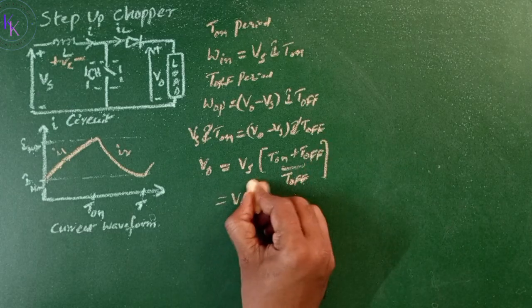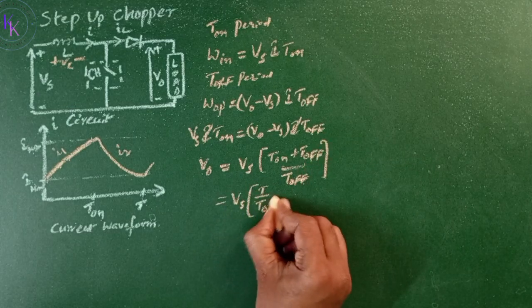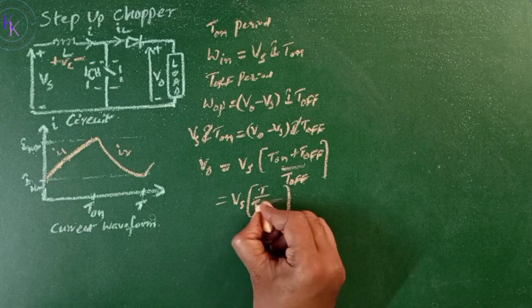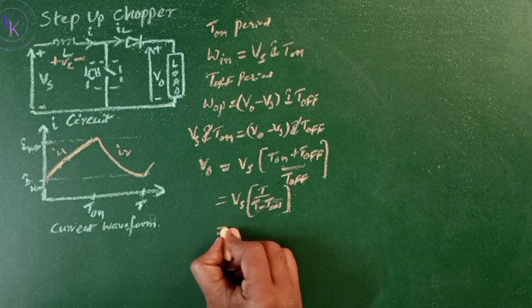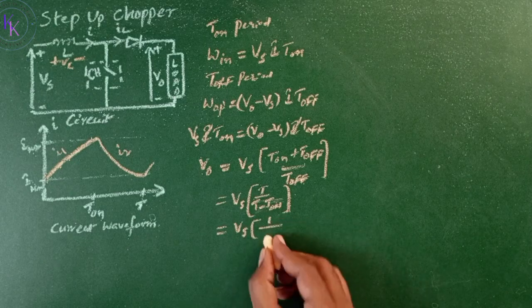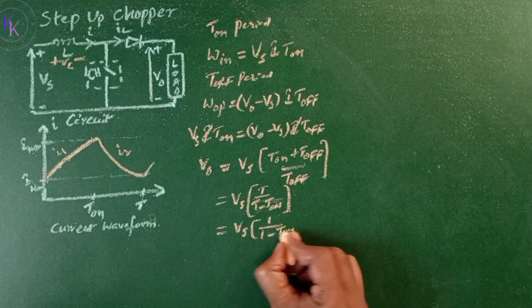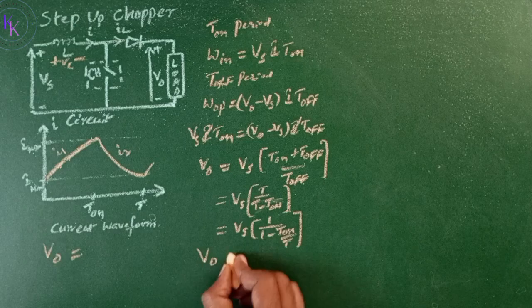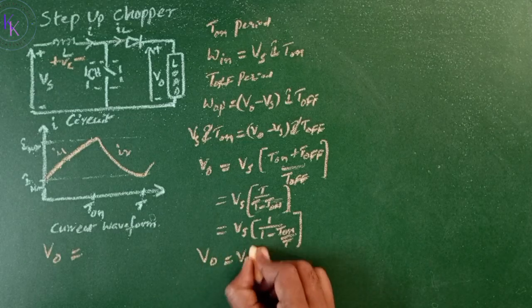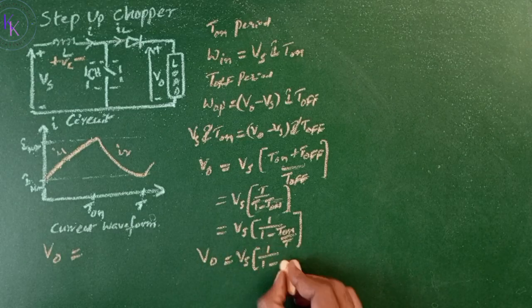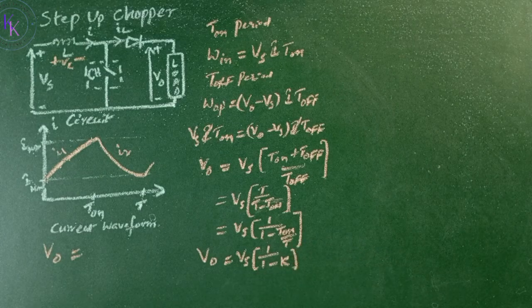That equals Vs times T divided by T off. T off can be written as T minus T on. That equals Vs times 1 over (1 minus T on divided by T). Output voltage V0 equals Vs times 1 over (1 minus K), where K is the duty cycle.